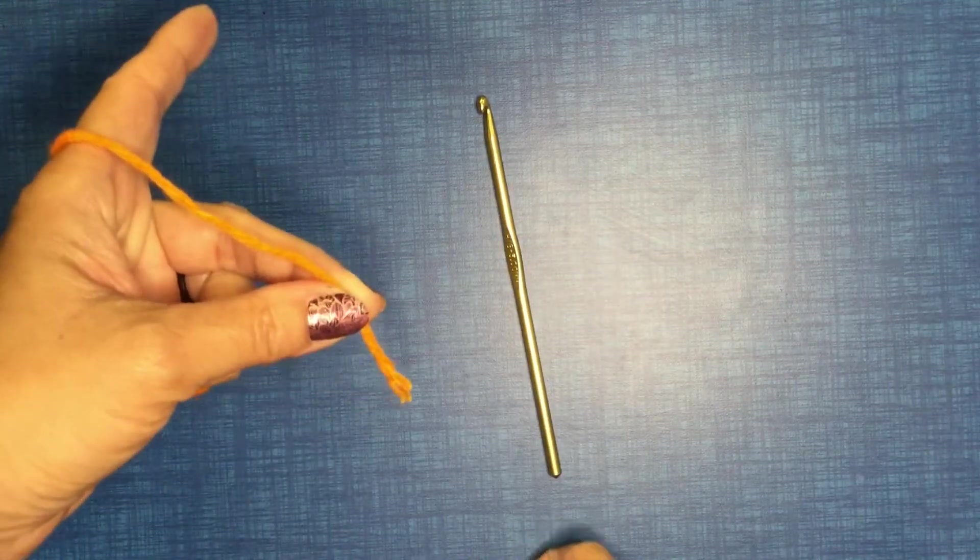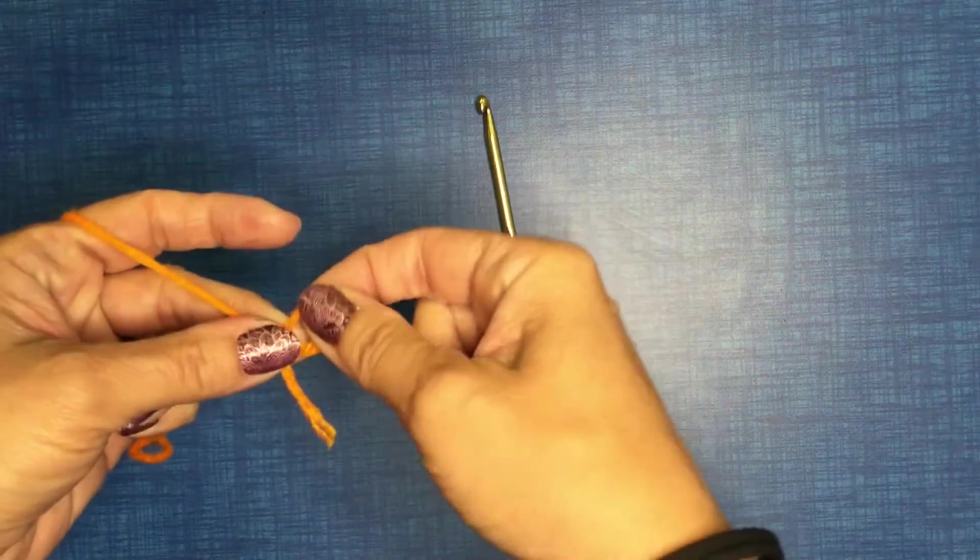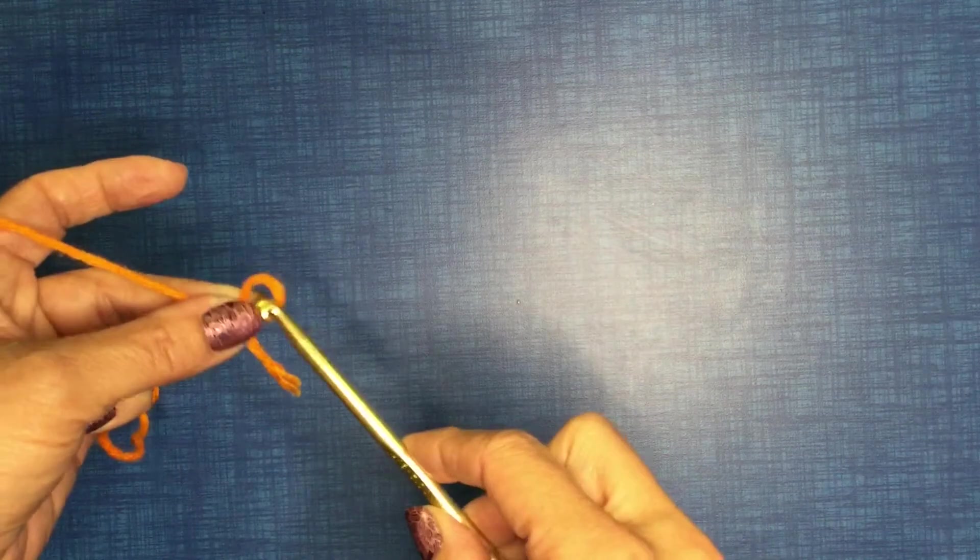To make our loop, to hold our hook, we twist and hold our loop, put our hook through.